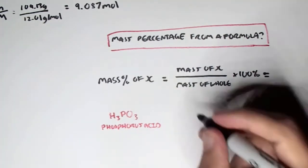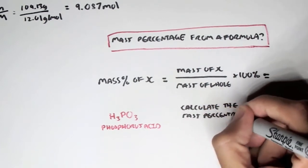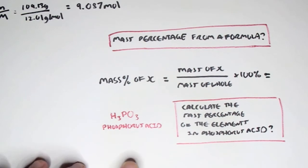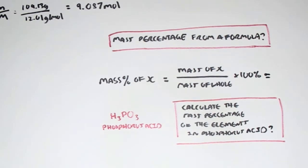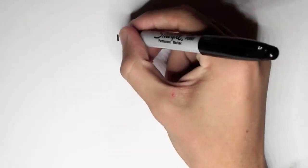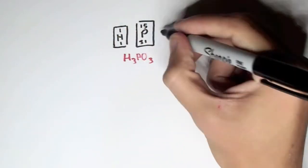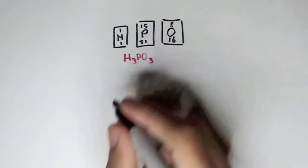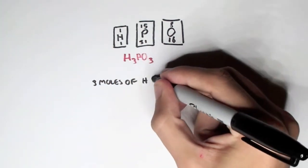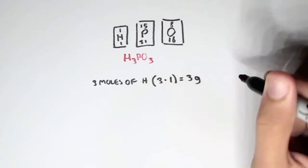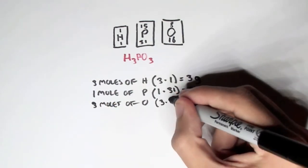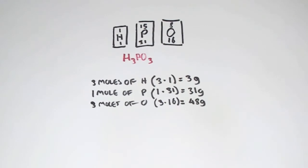For example, phosphorus acid has the chemical formula H₃PO₃. Calculate the mass percentage of each element. From the periodic table: hydrogen = 1, phosphorus = 31, oxygen = 16 grams per mole. The mass of the whole: 3 hydrogens gives 3×1 = 3 grams; 1 phosphorus gives 1×31 = 31 grams; 3 oxygens gives 3×16 = 48 grams. Total mass of H₃PO₃ = 82 grams.